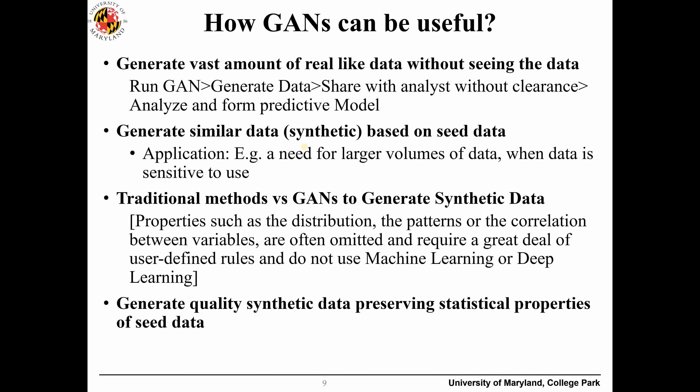Let me elaborate the use case a little more. For example, with a high side and low side scenario: someone who works on the high side and has access to the high side data can use GAN to generate synthetic data and give it to the low side people who don't have access to classified data.